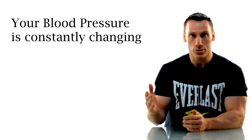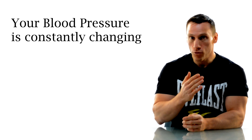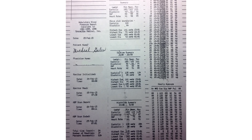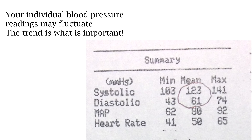Your blood pressure is constantly changing throughout the day, and it's the overall trend that's much more important than one particular reading. To illustrate this, I wore a blood pressure monitor that took my blood pressure every half hour for 24 hours. At one point I had a minimum of 103 over 43 — probably while sleeping — and at another point 141 over 74, possibly while playing a tense hand of Texas Hold'em. But overall my average systolic was 123 and my diastolic was 61, and I have no symptoms whatsoever, so for me that is normal.